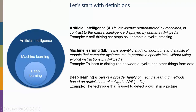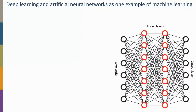Deep learning is a subclass within machine learning — it's part of a broad family of machine learning methods based on artificial neural networks. It's a specific technique used, for example, to detect a cyclist in a picture. An artificial neural network is inspired by the human brain, which works with many interconnected neurons — by changing connectivity between neurons, we learn.